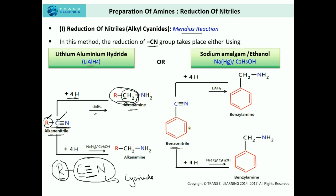The same process applies with the aromatic ring. Whether we have an alkyl group or an aromatic ring, the process remains the same. In the presence of hydrogen and a reducing agent like lithium aluminium hydride, or sodium amalgam and ethanol, the nitrile gets reduced to an amine which has one more carbon atom than the cyanide. The presence of an alkyl or aromatic ring makes no difference — the same reagents and process are used to convert nitriles into amines.